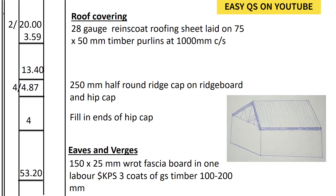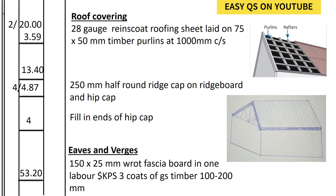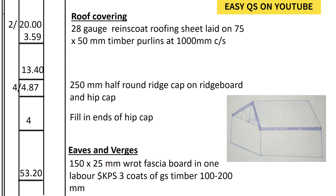Now we shall go to the eaves and verges and we shall start with the fascia board. What is the total length of the fascia board? The fascia board on the length side is equal to the length of the parlin. Because it's a hipped roof, we will not have a barge board.